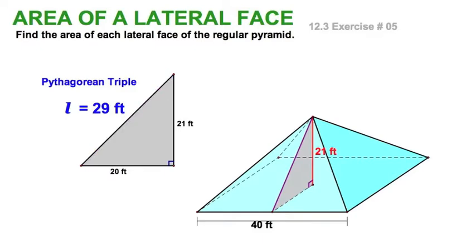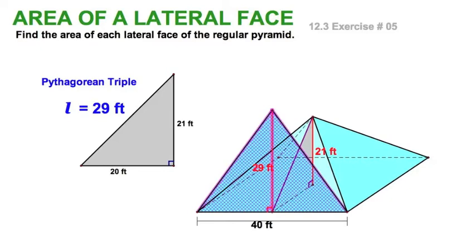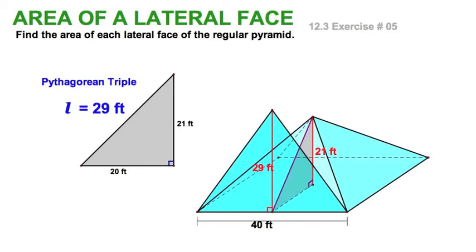The slant height is the hypotenuse of this triangle, which is formed with the apothem and the altitude of the pyramid. Now let's have a look at this one face. We're going to fold it up like this. That's just a triangle. We'll just find the area of that triangle.